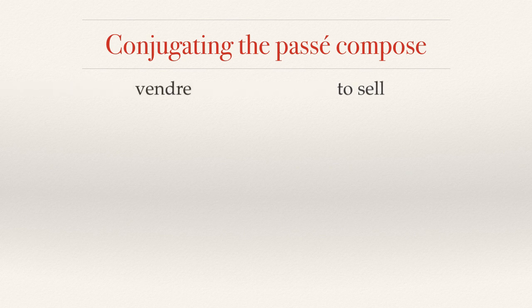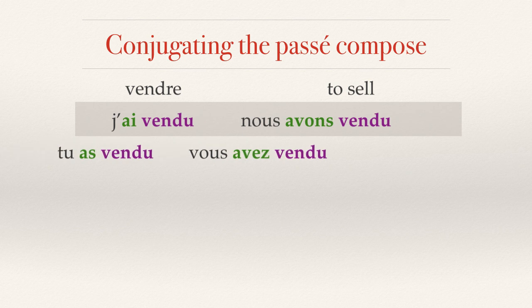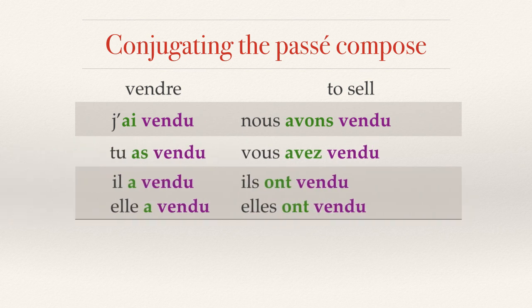For RE verbs, vendre — to sell — is the same. We drop the RE and put U to get our past participle: vendu. And we conjugate the verb avoir throughout. So: j'ai vendu, tu as vendu, il a vendu, elle a vendu, nous avons vendu, vous avez vendu, ils ont vendu, elles ont vendu.